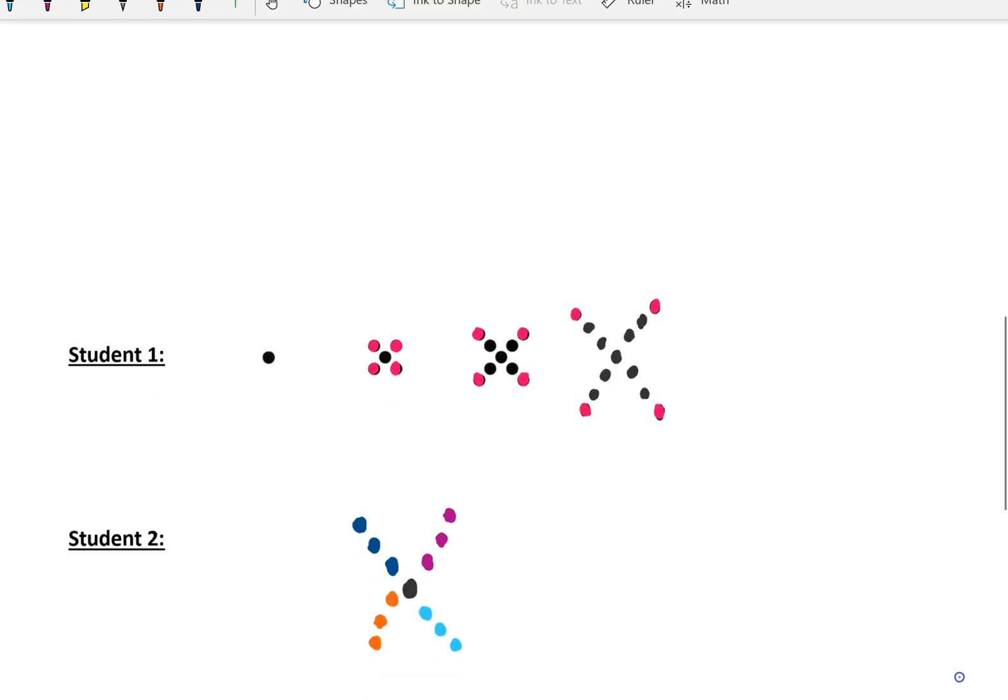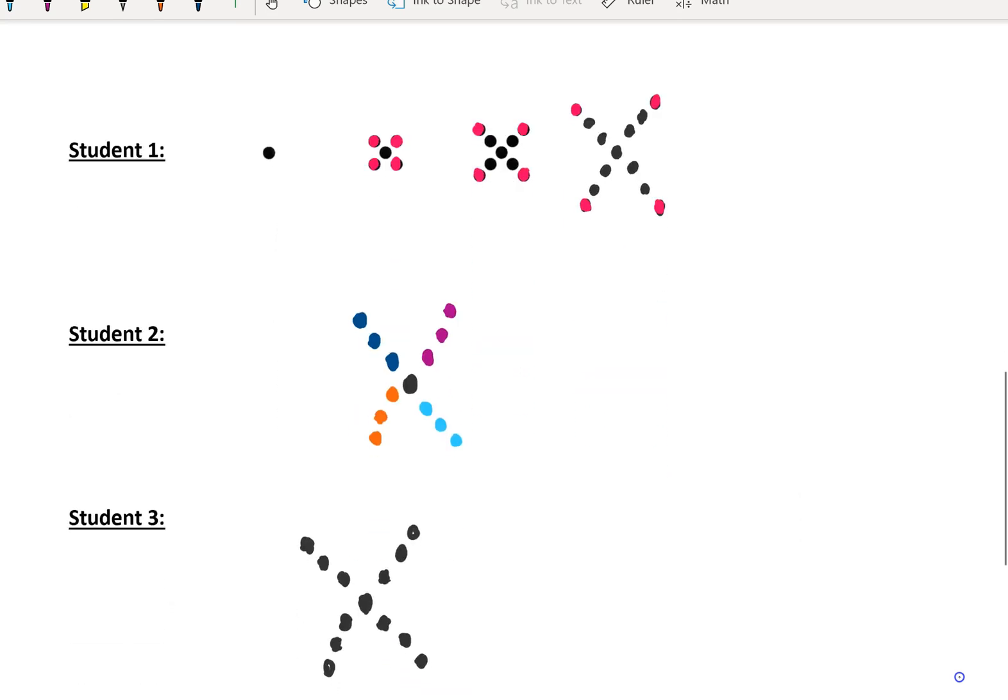To get there, let's break down this series of images in the way that three different students might represent it. One of the most intuitive ways is the way we were kind of just talking about, and you can see that represented here with student one. Each time student one is seeing the plus four dots being added on. Those are represented there in pink. There's the four dots being added in each image.